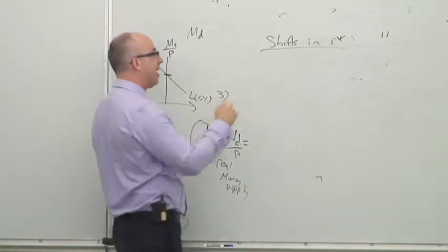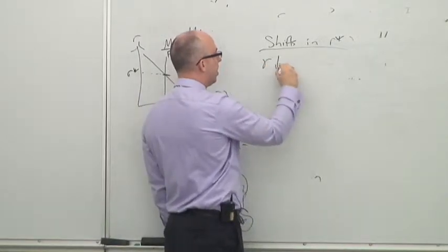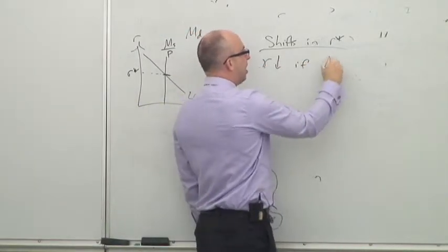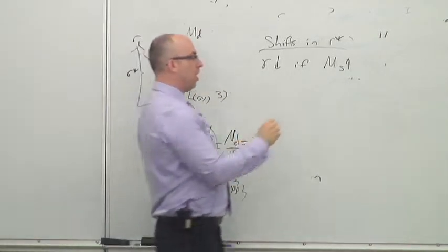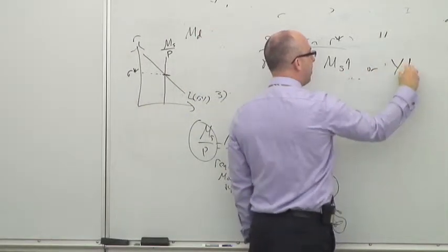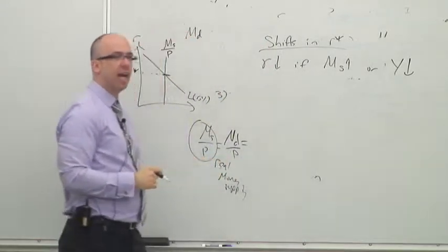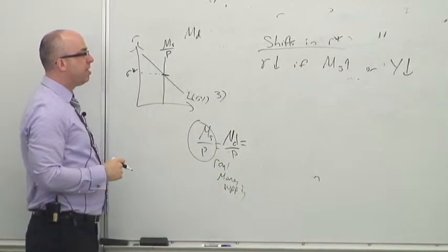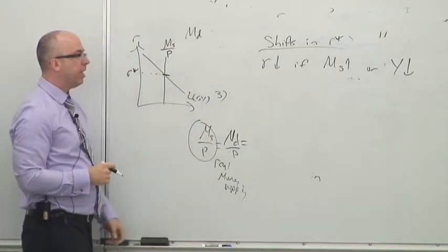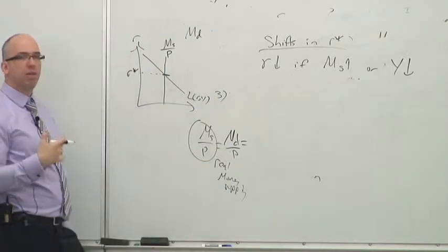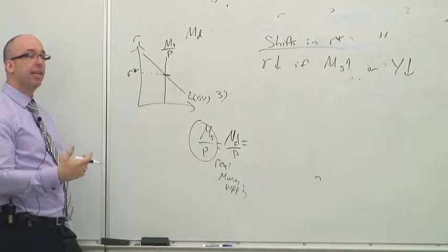The two big things that make interest rates go down are if the Fed increases the money supply or if GDP or income goes down. This is just how the economy naturally operates - low income means that people don't need as much money. They're going to demand less money.